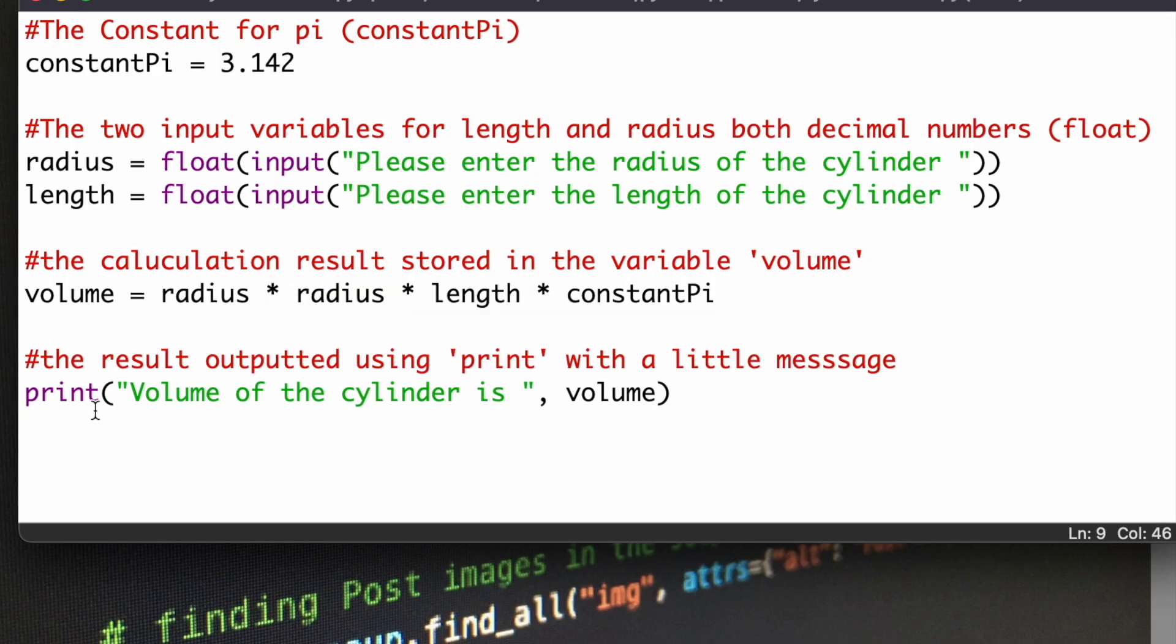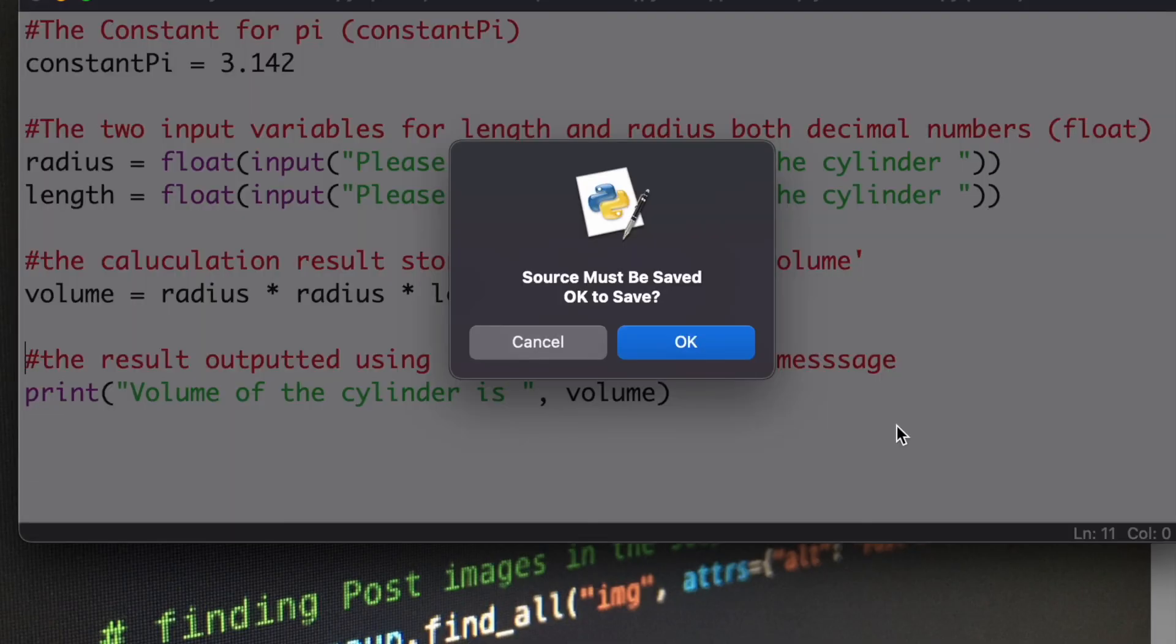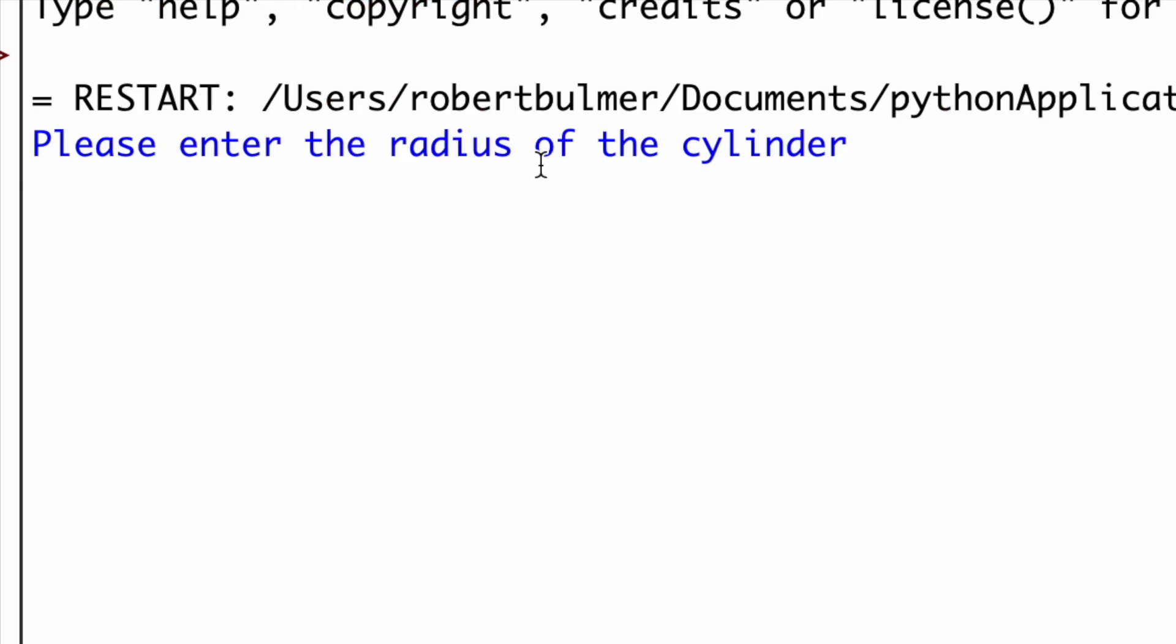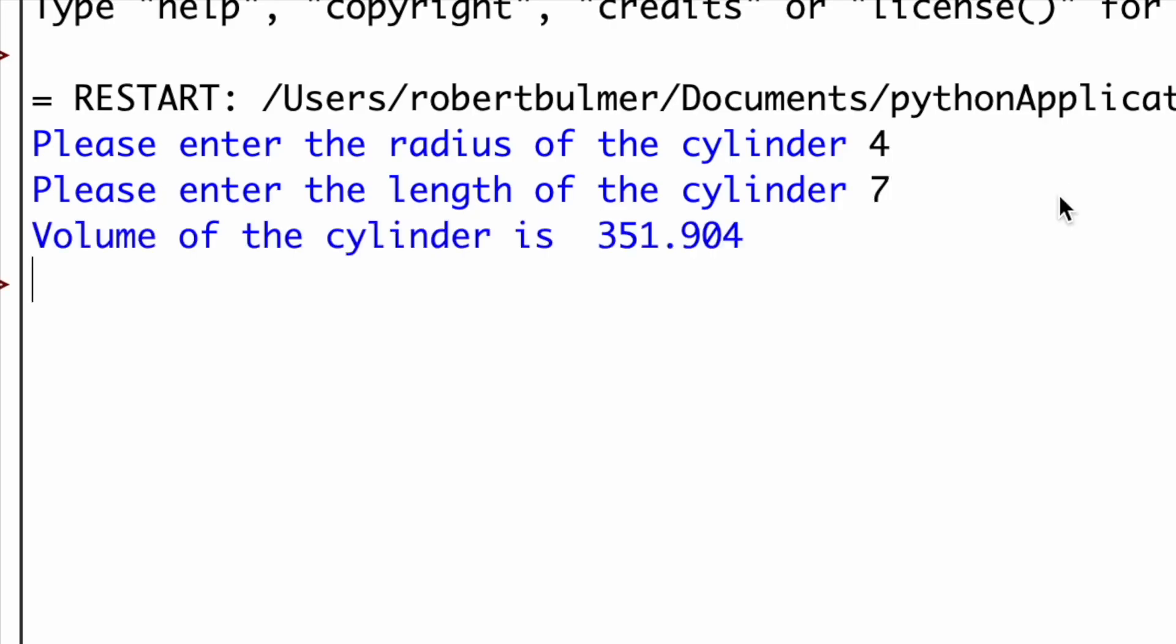And then finally, I've got a print statement at the bottom. In this we have a message, volume of the cylinder is, and then it's going to call upon volume, the variable volume, to output the value that we have from this. So, we'll run it and see, save the program. Please enter the radius of the cylinder. I'm going to put four, please enter the length, we'll put seven, and it gives me a value, volume of the cylinder is 351.904. Now, we can go further with this, and we can put the measurements in, and various other bits and bobs, but just for now, that is how I would solve that problem.